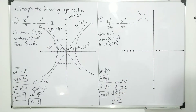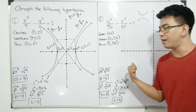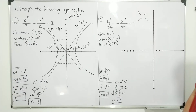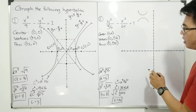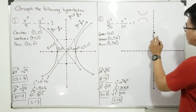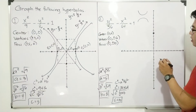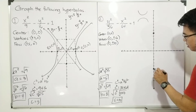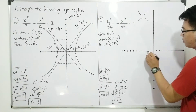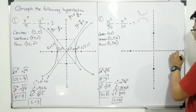Now we are ready to start graphing. We use the value of a, which is 6. Since the orientation is vertical, from the center we move 6 units up and 6 units down. Then for the value of b, which is 8, we move from the center 8 units to the left and 8 units to the right. With these points, we can draw the rectangle.